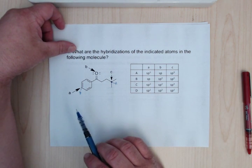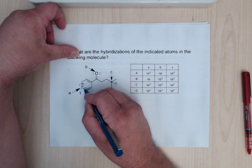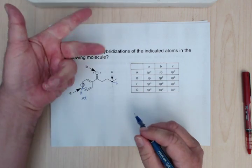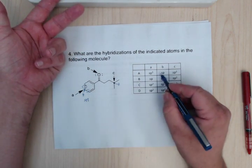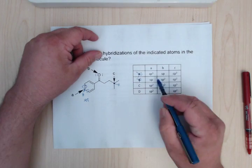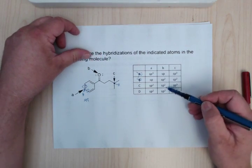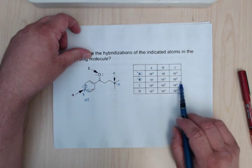So for A, we have no lone pairs, but we have 1, 2, 3 bond sets. So this better be SPP. We need 3 letters, 1, 2, 3. So this is SP2, so we can get rid of these two, because it has to at least be this. And notice how these are both SP2, so we don't even have to worry about that one. We just have to look at C.